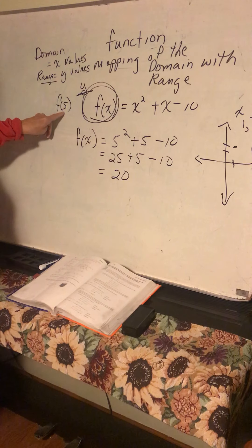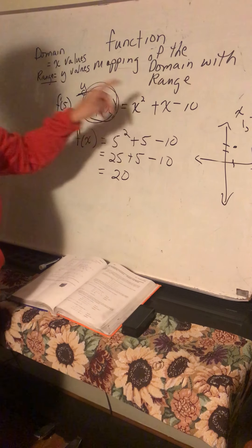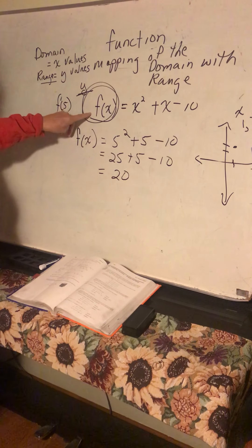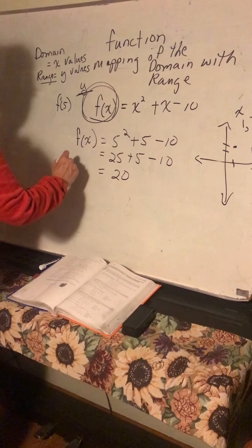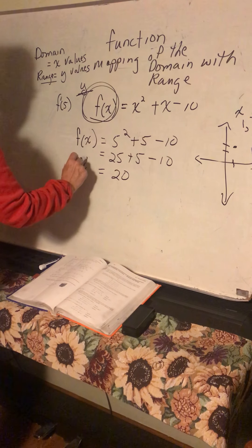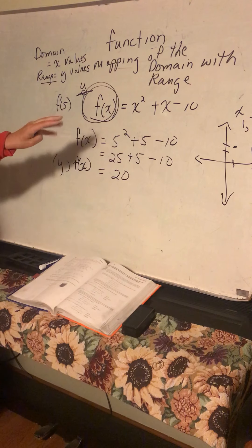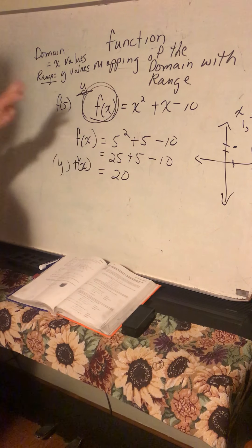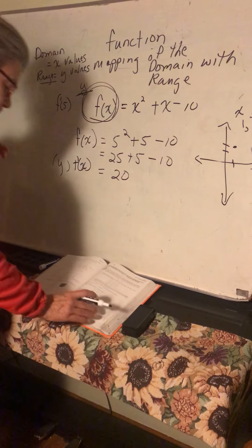25 plus 5 minus 10 equals 30 minus 10, which is 20. So the function of x is 20. When you put 5 in for x, your y value or your range value is 20 — this is the same as y. That's really all there is to it, and that's basically all you need to know before you get into Algebra 2.